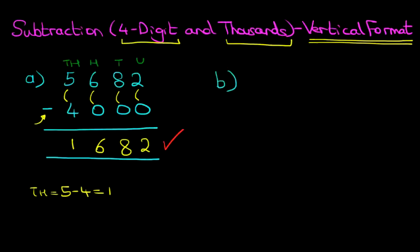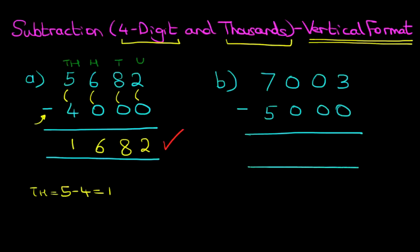Very simple. Now, let's have a look at one more. We've got 7,003 minus 5,000. Now, we don't even need to do the workings, because this really is just as simple.